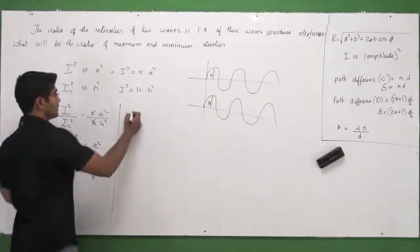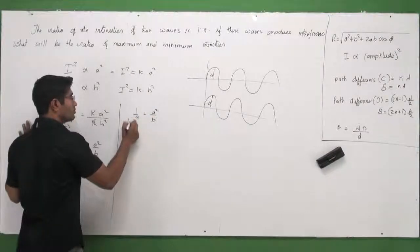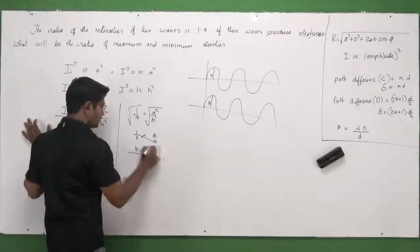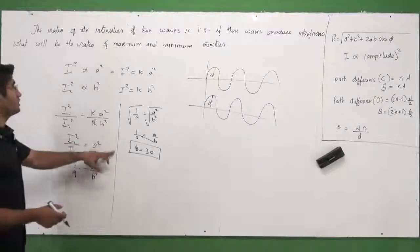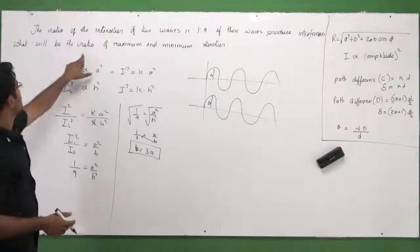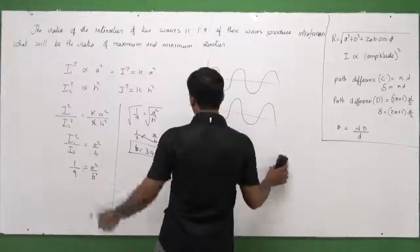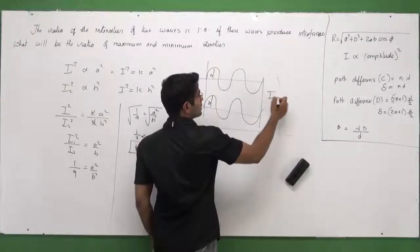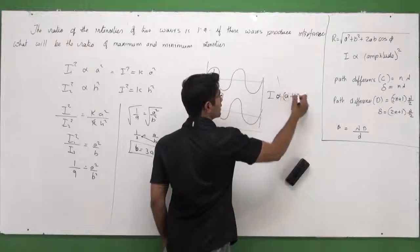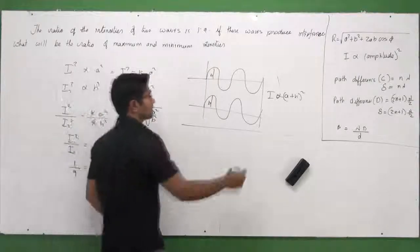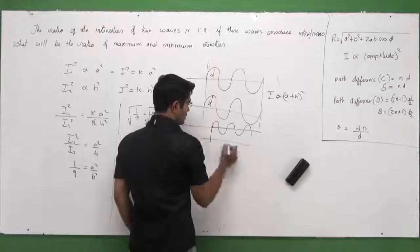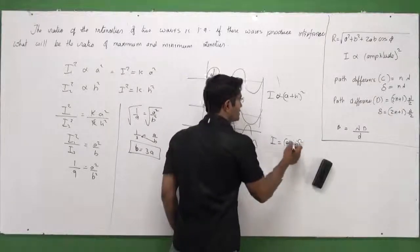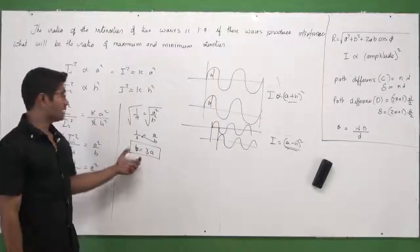If I solve this — 1/9 equals a squared by b squared — taking square roots on both sides gives 1/3 equals a by b, and cross-multiplying gives b equals 3a. This is the relation I need. The question asks for the ratio of maximum and minimum intensities: Imax corresponds to constructive interference, so it's proportional to a plus b whole squared, and Imin corresponds to destructive interference, proportional to a minus b whole squared. So I need a and b values, and at least a relation between them.